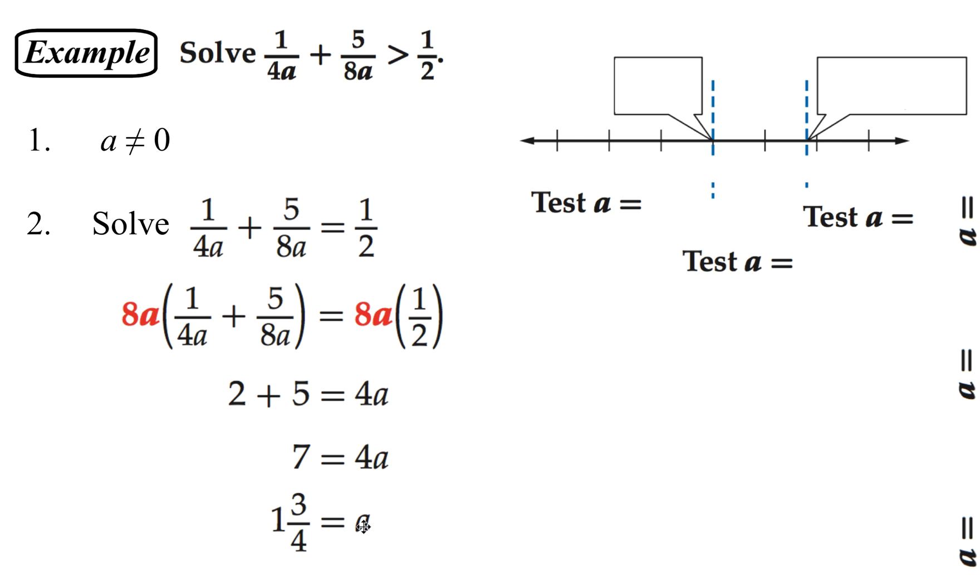But our next step is to go ahead and divide up a number line into intervals. Since A can't be 0, and we got A equals 1 and 3 fourths, that's going to help us divide our number line. We're going to have a vertical line at 0, a vertical line at 1 and 3 fourths.